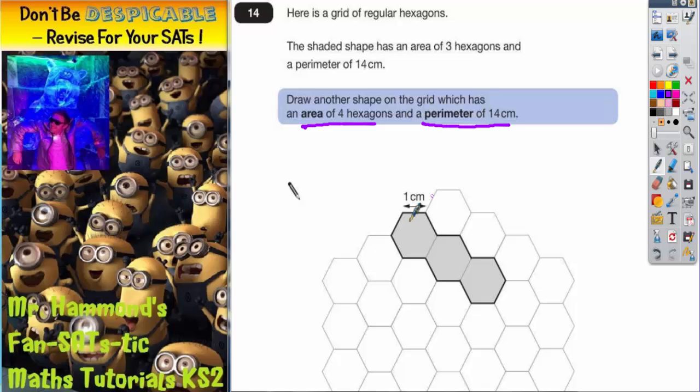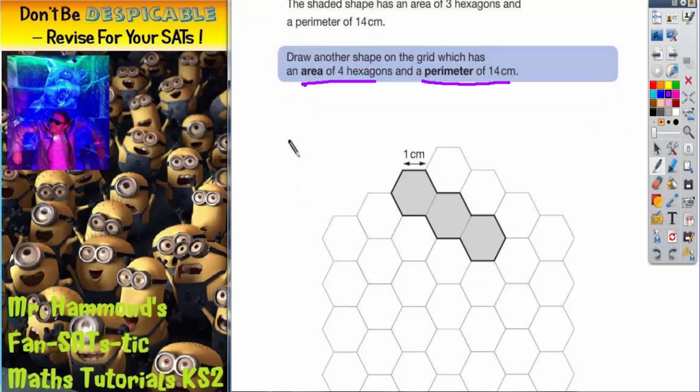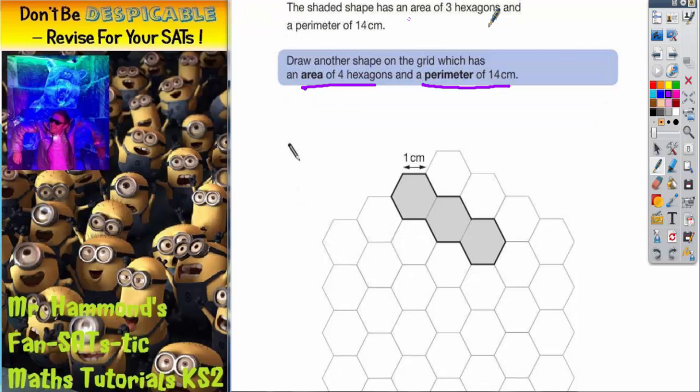Well, let's first talk about the example that's been done for us. It says it's got an area of 3, perimeter of 14. The area of 3 is from this: 1, 2, 3 hexagons.